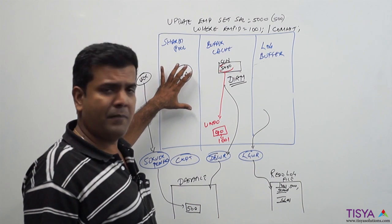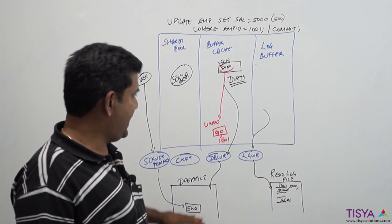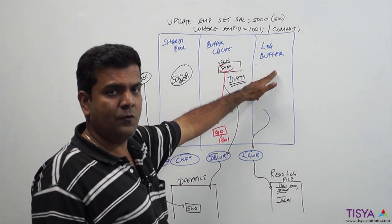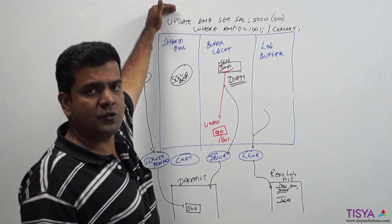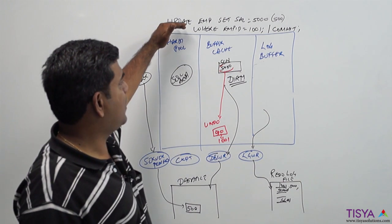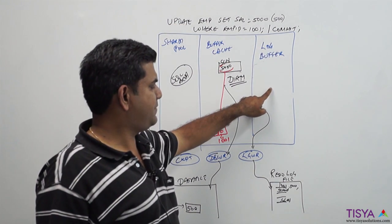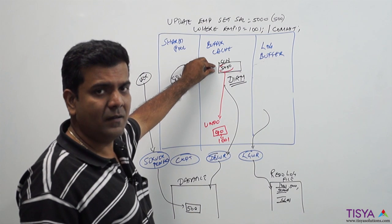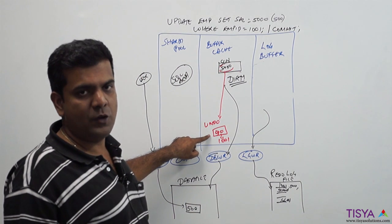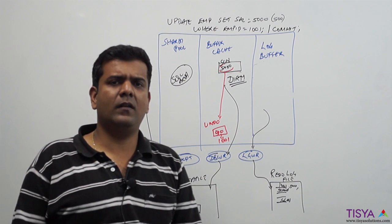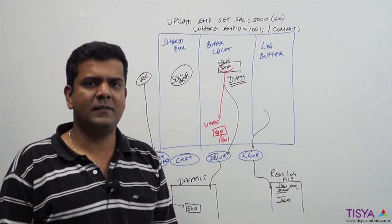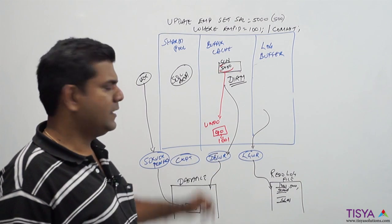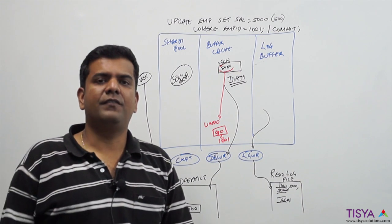An update goes through the same steps of performing a parse, bring the data from the data files into the memory, keep the copy in log buffer of the old value and the new value, keep the old value in undo. User is told statement processed. Later on when the user issues a commit, a system change number is generated and the entire contents of the log buffer are emptied. The lock is released and the undo is now eligible for being overwritten. That's about a quick look into how a DML statement gets processed, which gives us a pretty good understanding about these three important memory components, log writer, DB writer, and the activity of the server process.